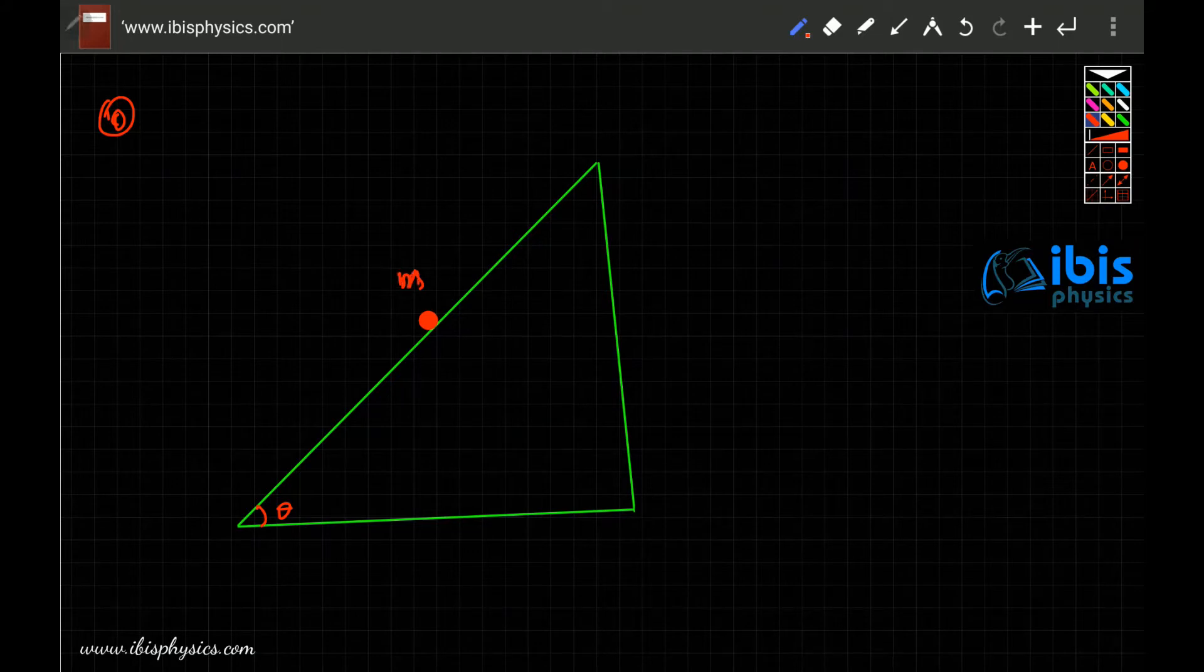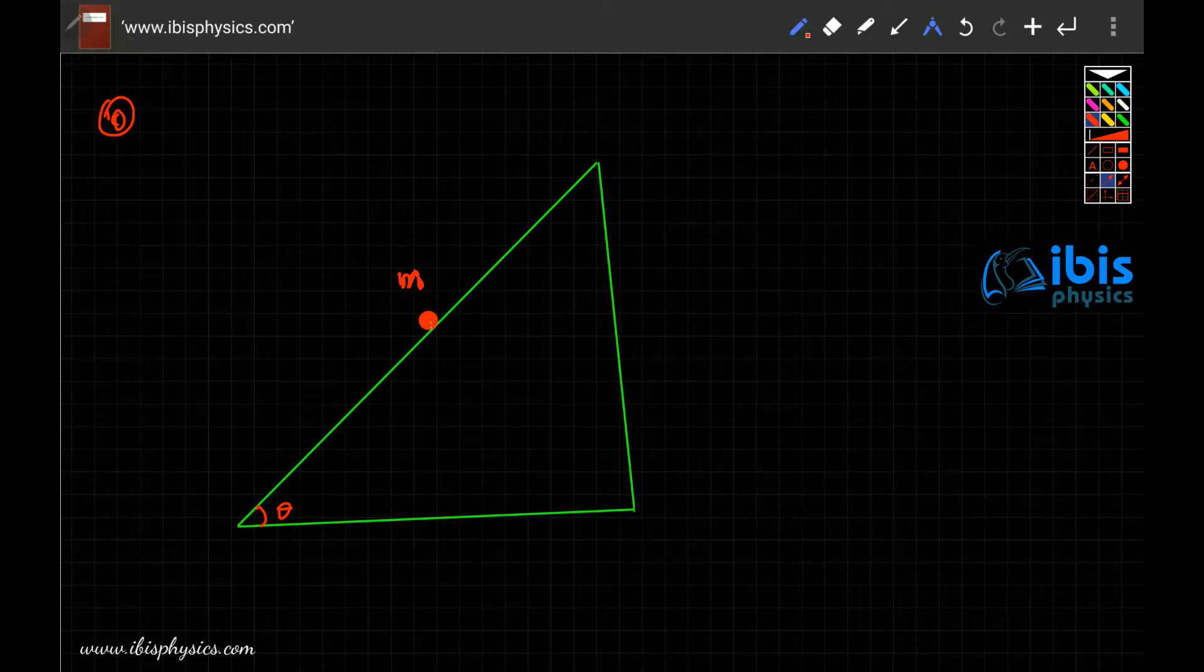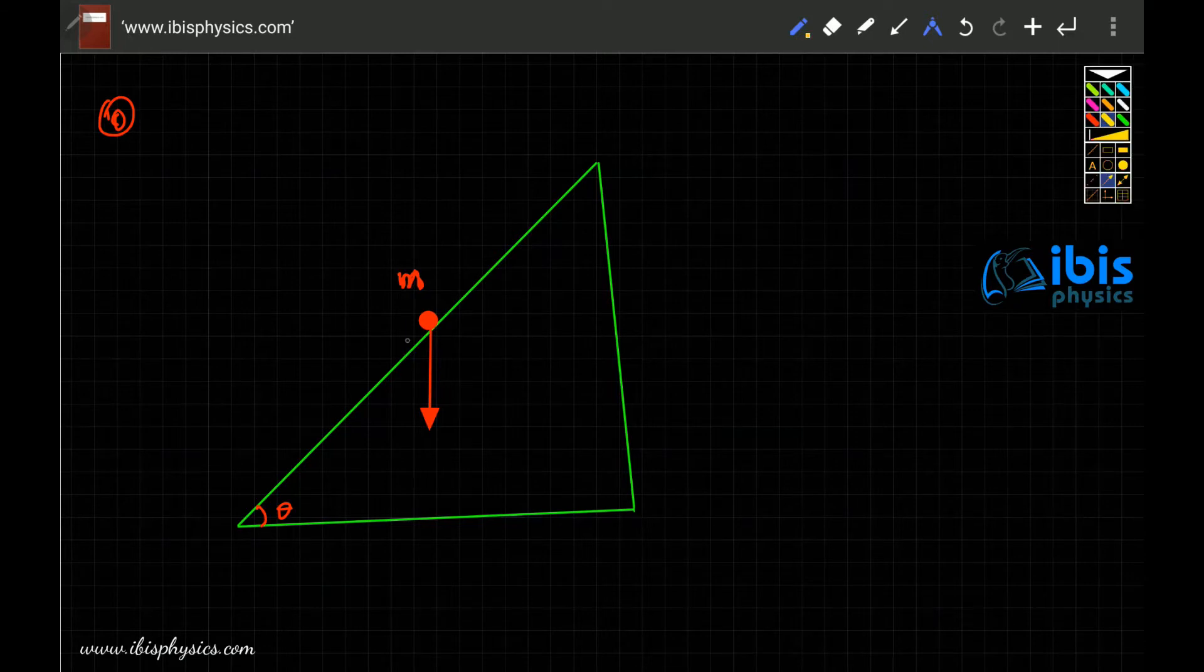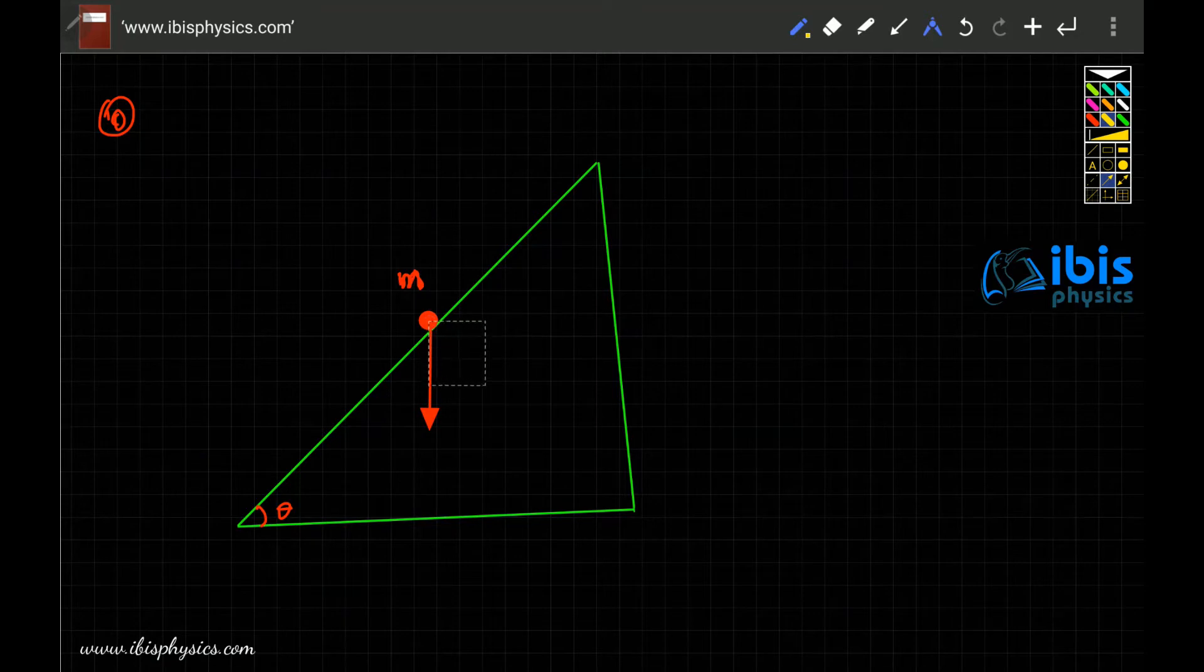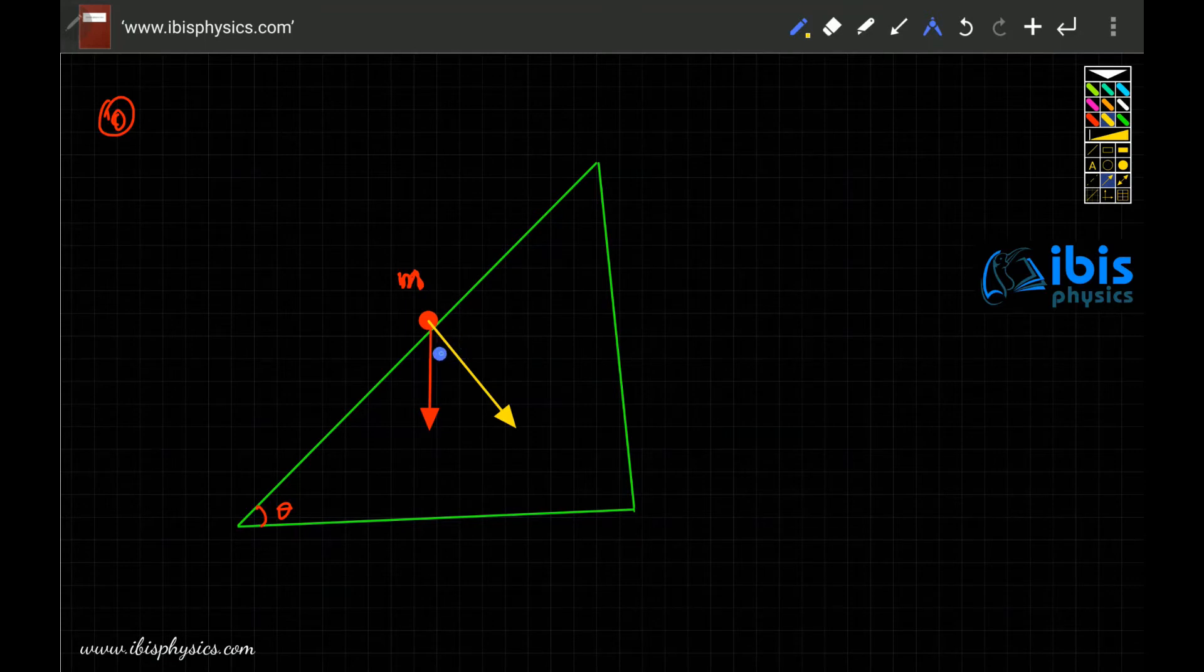Since the mass M is on an inclined plane, the force acting on the mass vertically downward is its weight, that is mg. Then we have already seen cases that this mg can be resolved into two components. One is the component perpendicular to the plane which we call theta if this angle is theta.